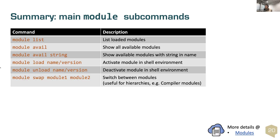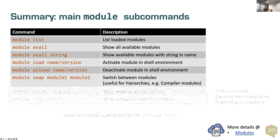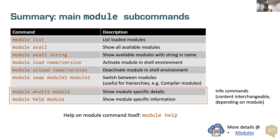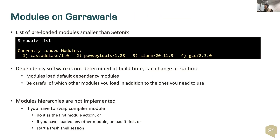There are several module commands: 'module list', 'module avail', 'module avail <string>', 'module load <name/version>', 'module unload <name>' (version can be skipped for unloading), and 'module swap'. Also, 'module whatis <module>' gives text information included in the module, and 'module help <module>' shows help information. In our other supercomputers, modules are similar — not the same modules, but the same idea applies.